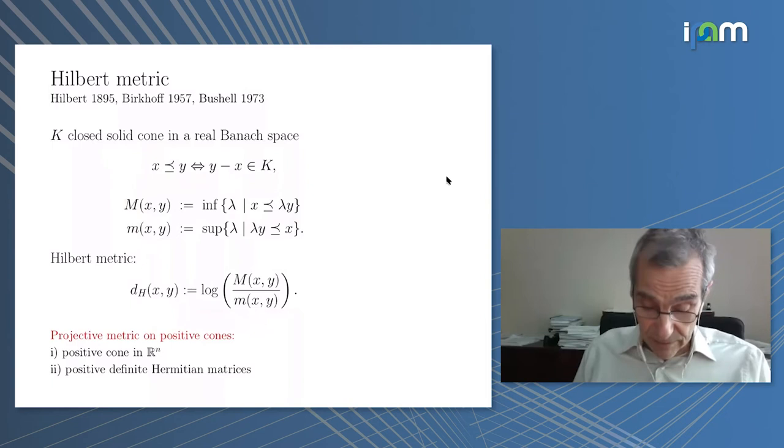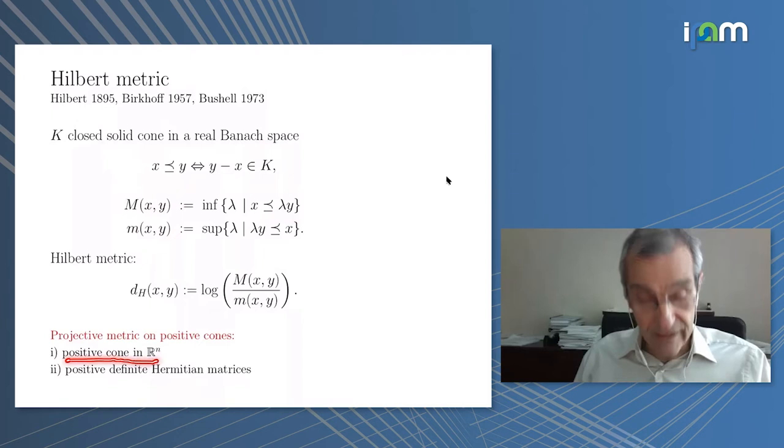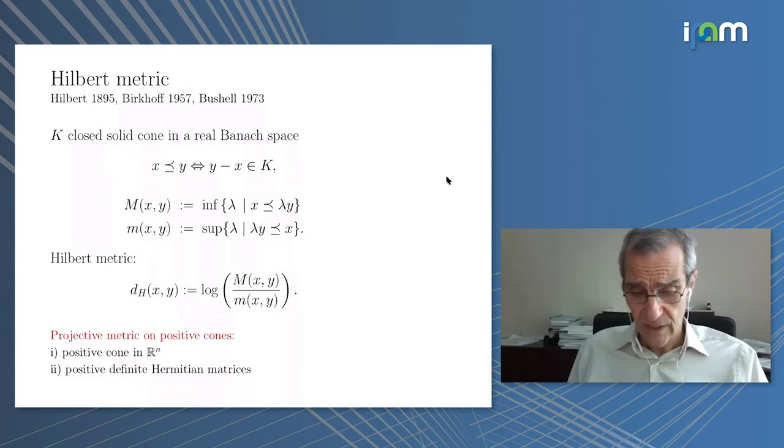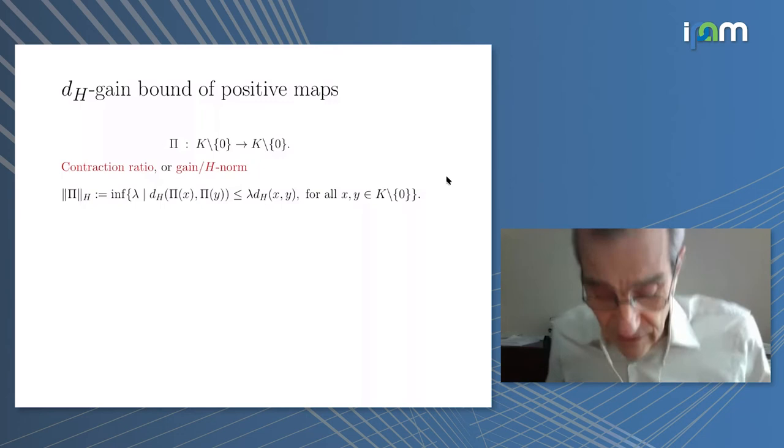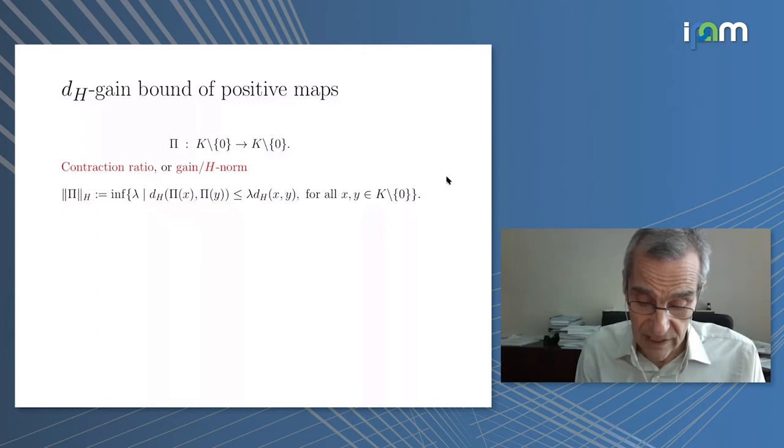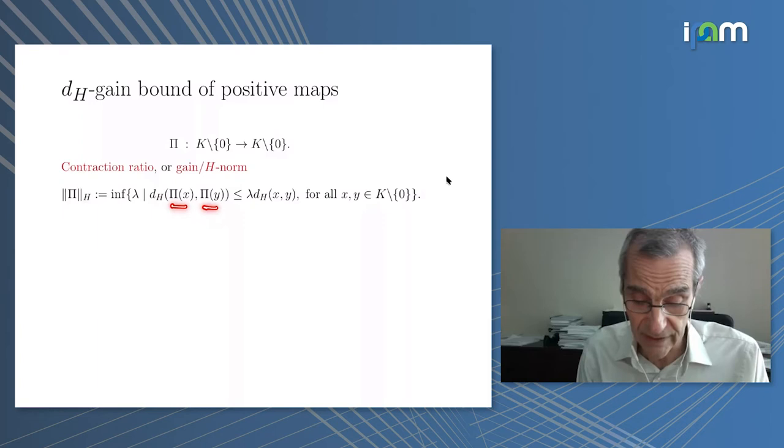There are two very interesting examples: when the cone, the positive cone, is the positive quadrant in R^m, this is the context of Markov chains, and the other example is positive definite hermitian matrices which connects us with quantum. Then having that in place we can define the gain of a map. The gain of the map is the least amplification, sort of the least amplification distance. So if you apply the map to two entries x and y you want to see how it contracts, so it's like the contraction ratio.